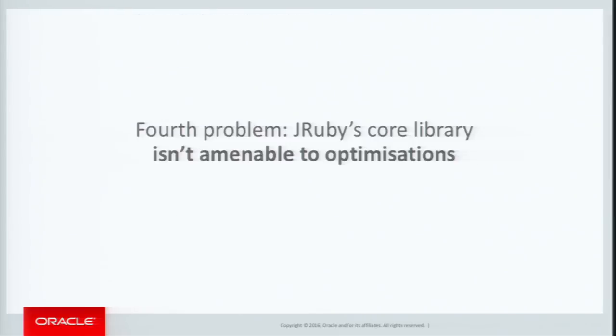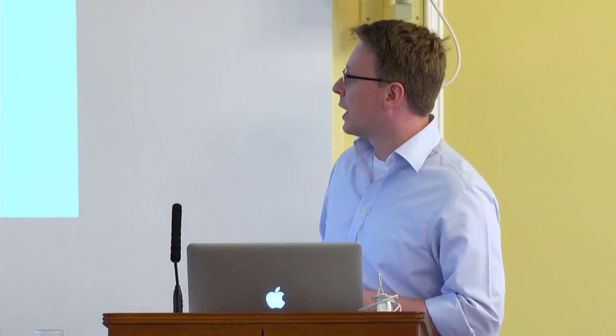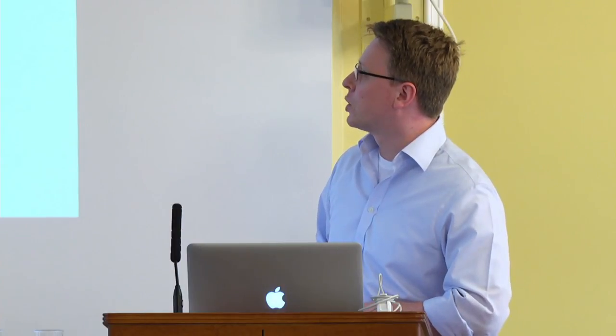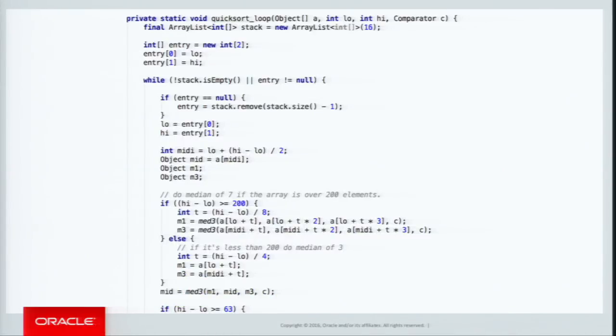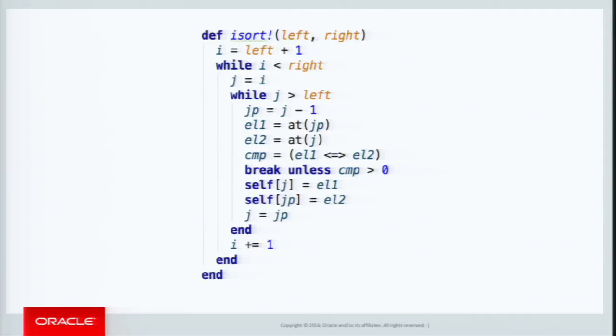JRuby's core library also isn't amenable to optimization. The sort routine includes too much stuff — too much that defeats escape analysis, too much that's generic and megamorphic. Rubinius implemented much of the core library in Ruby, which seems like a really good solution. Many VMs are starting to implement functionality in the guest language itself — Rubinius has most of its core library in Ruby, JavaScript implementations are doing this, and of course Java has the JDK in Java.